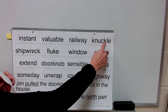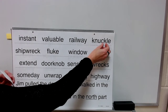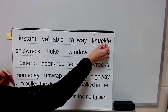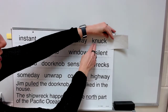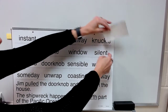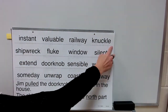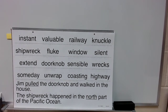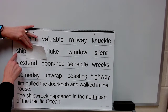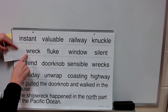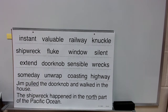I see consonant-l-e, but I also see a c-k. So we're going to keep the c-k together. First syllable: knuck. Syllable: le. Word: knuckle. Syllable: ship. Syllable: wreck. Word: shipwreck.